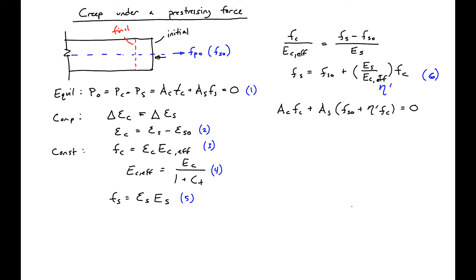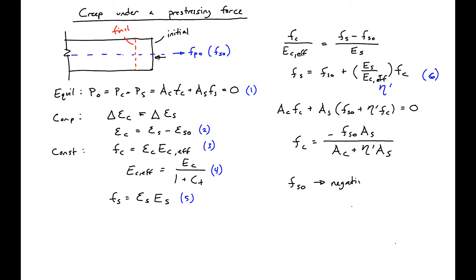Plugging equation 6 back into equation 1, we can solve for FC: FC equals negative FS0 times AS, divided by (AC plus eta-prime times AS). Because FS0 is negative — since we applied an initial tension in the pre-stressing — we get a final concrete stress that is positive.